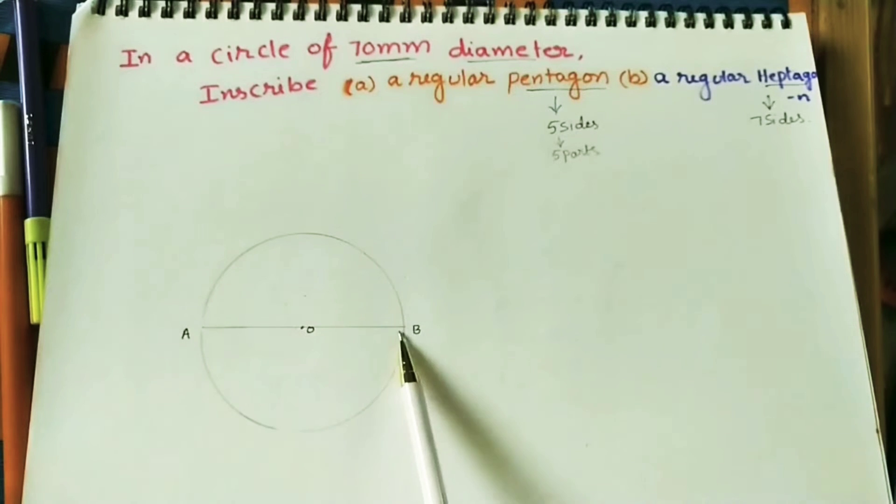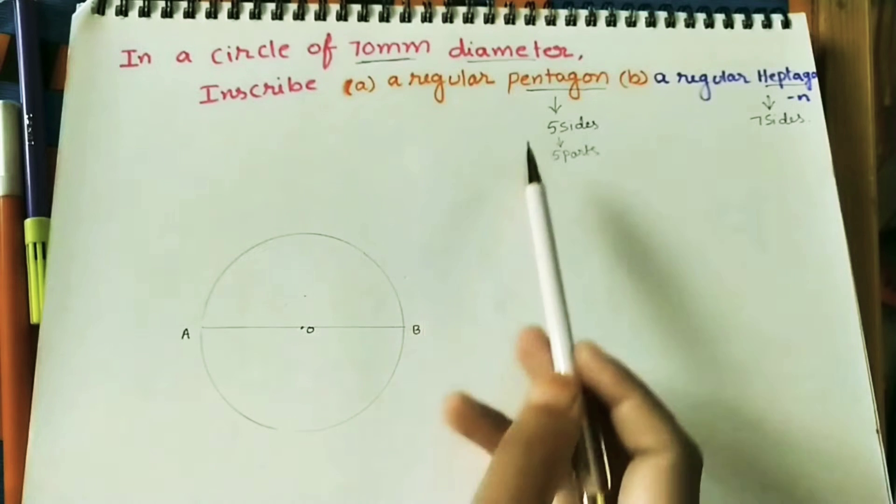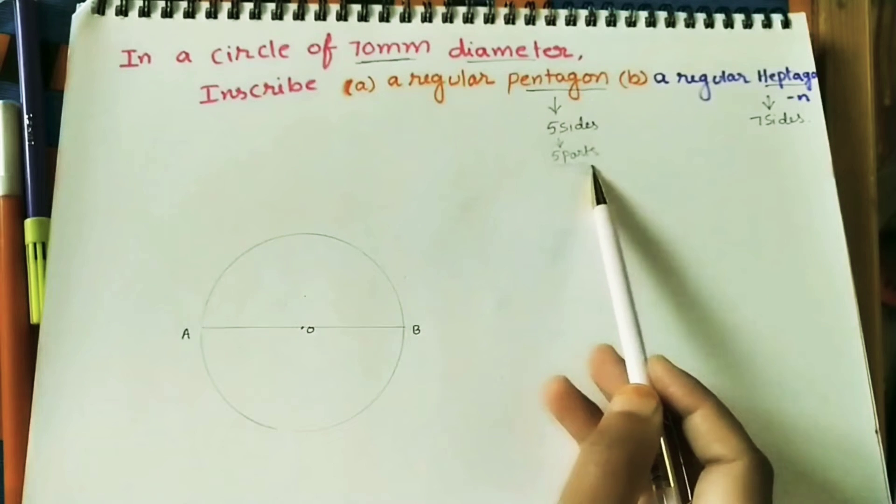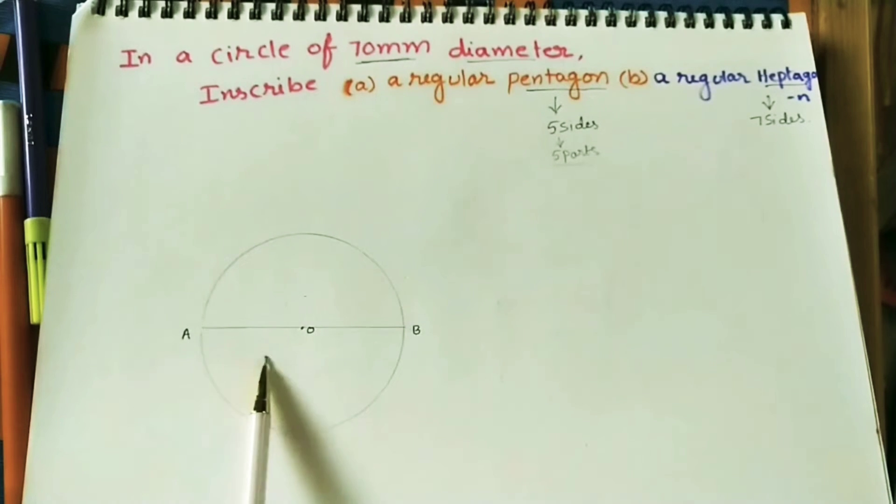If you are doing hexagon, divide this AB into 6 parts. If you are doing heptagon, divide this into 7 parts. Here we are doing the 5 parts for pentagon. For dividing it into 5 parts, just do 1 line.